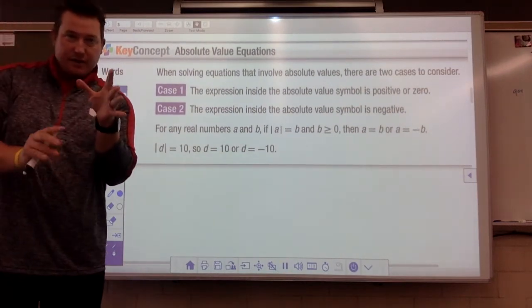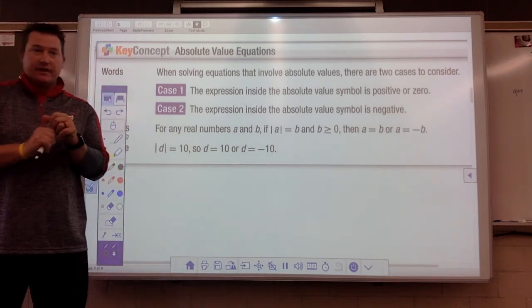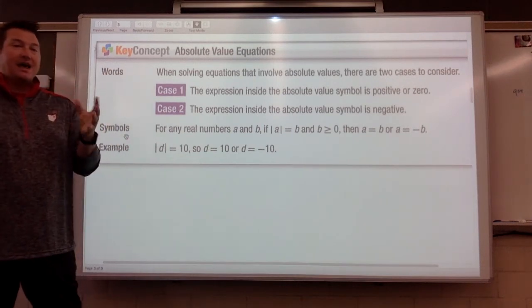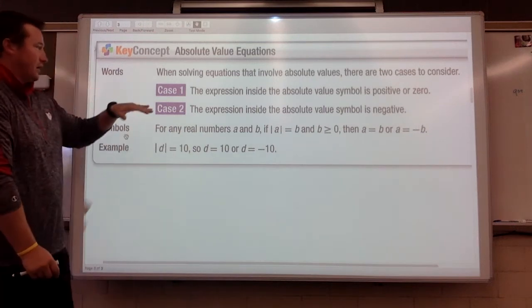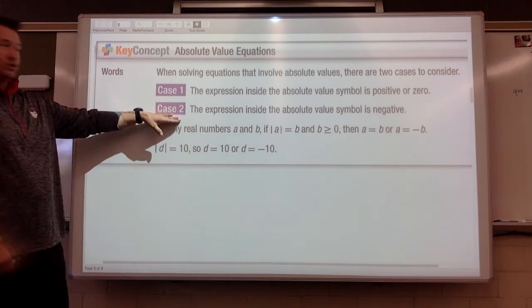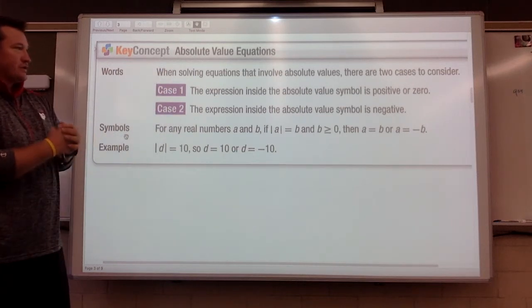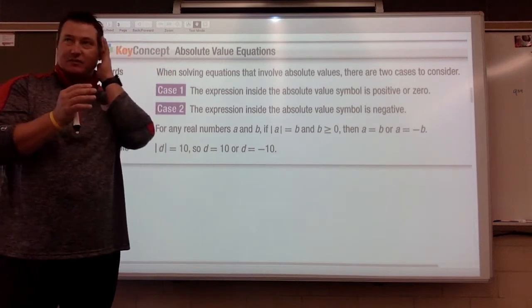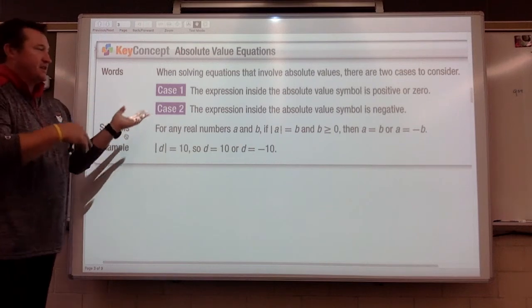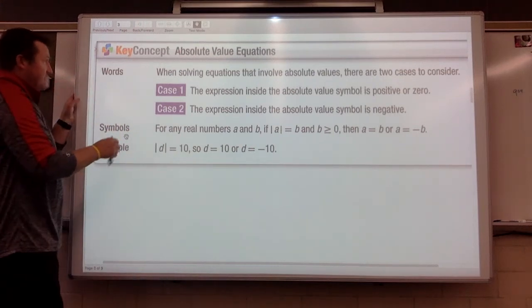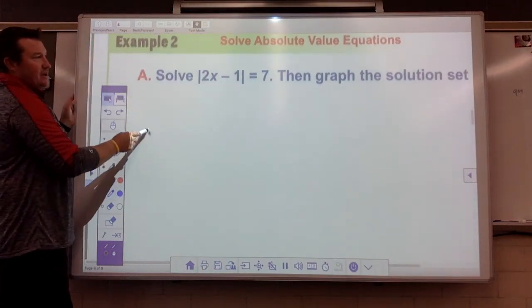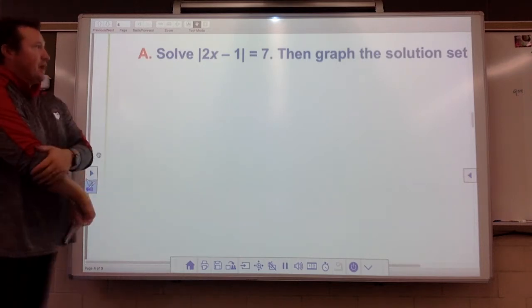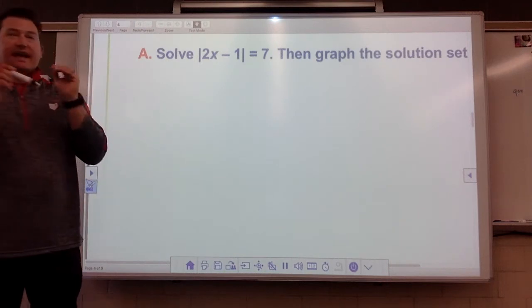Here's what makes absolute value equations a little bit different than before. A lot of our equations have had one answer. Some of them had infinite. Some of them have none. Absolute value equations will give us two answers. We have case one, and we have case two. You can read through this on your own. Basically, we take the expression that is inside the absolute value, and we're going to figure out if it's positive, if it's negative. None of this stuff really makes any sense until we do an example.